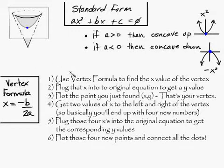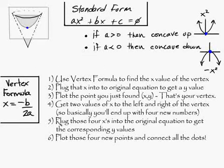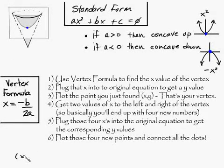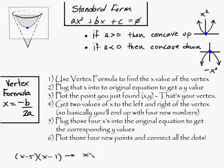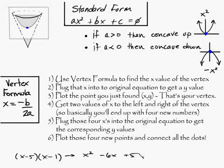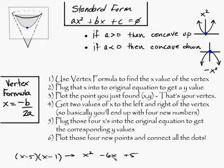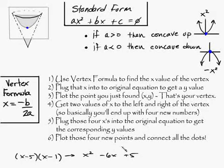The best way to show you is with an example. Let's invent a problem the way your teachers do it: x minus 5 times x minus 1. If you FOIL this out, you get x squared minus 6x plus 5. This is the equation we're going to use.